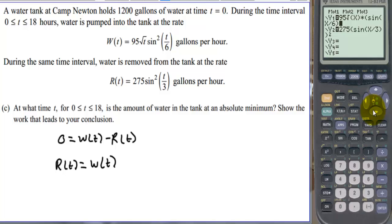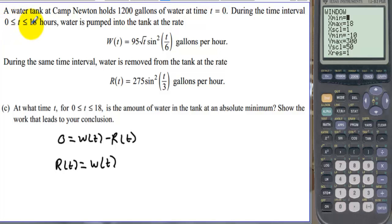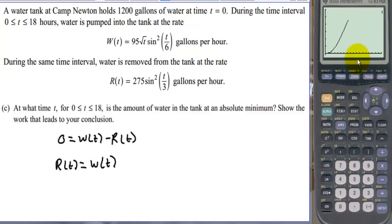Let's go to y equals. On the second function we'll make it a darker line by arrowing over and pressing enter once. In the window, we set x from 0 to 18 and y up to 300. We go by 50s. After graphing, we look for the intersection points of the two functions — that's where R(t) equals W(t). There are two intersection points.